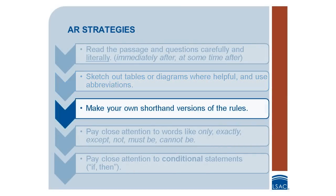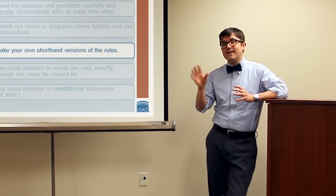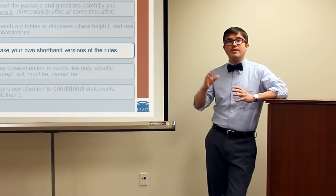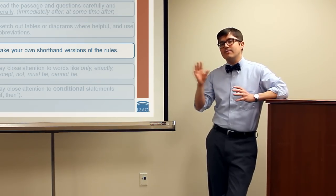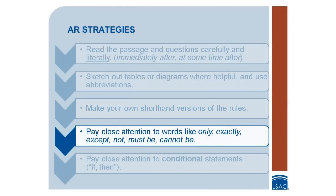Third, make your own shorthand versions of the rules. You'll need to refer back to the rules a number of times when answering the questions for an AR passage. Rather than reading them in full, it can help if you've written out a shorthand version. Fourth, pay close attention to words like 'only,' 'exactly,' 'except,' 'not,' 'must be,' 'cannot be.' These words carry important information.